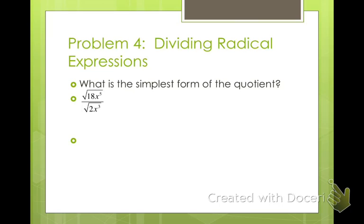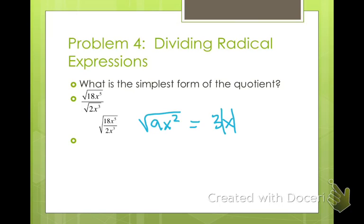When we divide radicals, the same rules apply: they have to have the same indexes, and then we divide like normal. We can put these under the same radical. 18 divided by 2 is 9, and x to the 5th divided by x cubed is 9x squared. The square root of 9x squared is 3x, and you put absolute values around x because it's an odd exponent and our root is an even number.